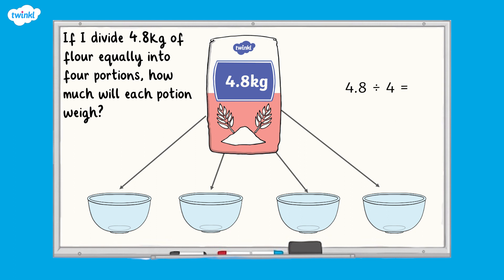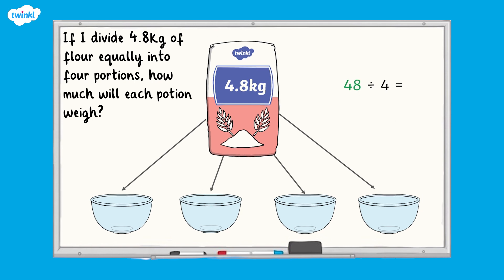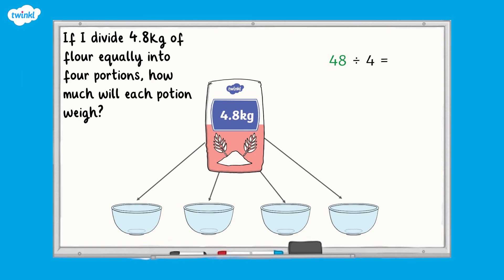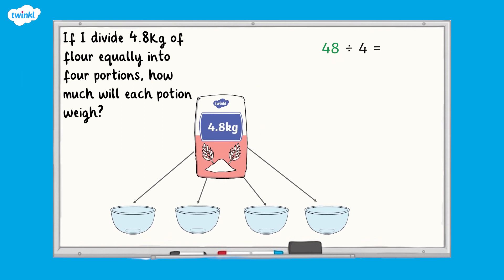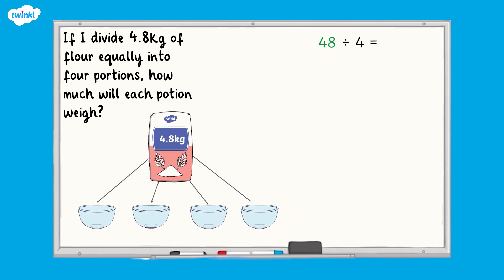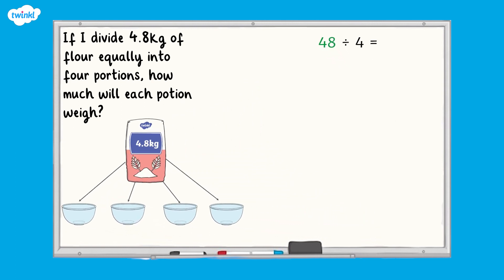To find the answer to this calculation, we can use our knowledge of place value and related facts. Firstly, let's imagine we have 48 kilograms of flour and we want to divide it into four equal portions. We can use the division calculation 48 divided by 4 to represent the problem, and we know that 48 divided by 4 equals 12.